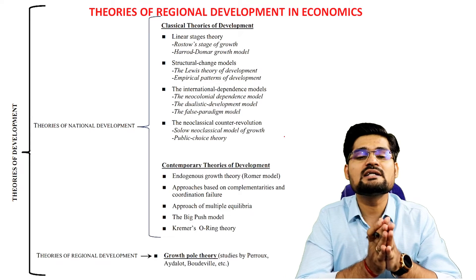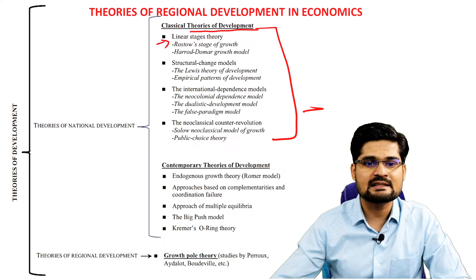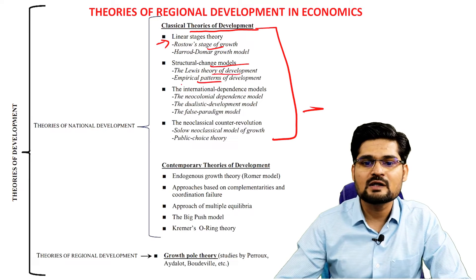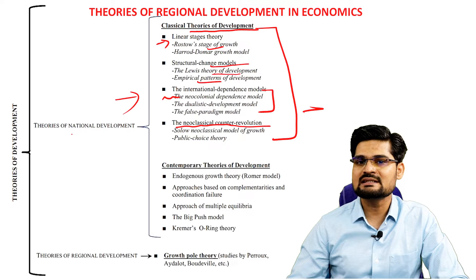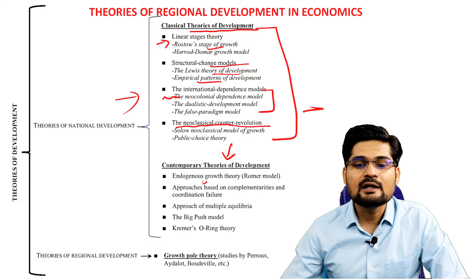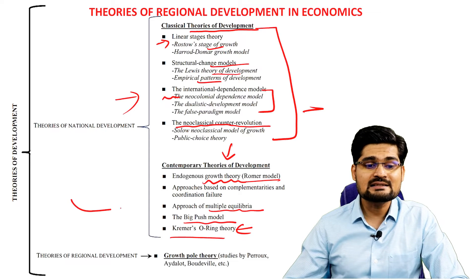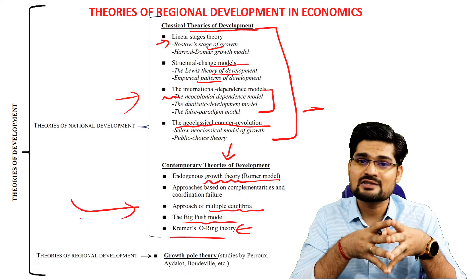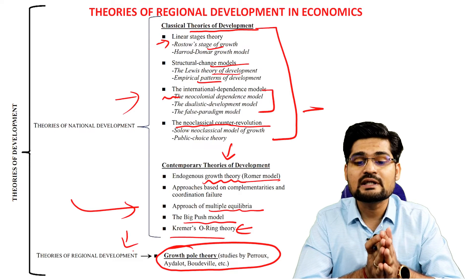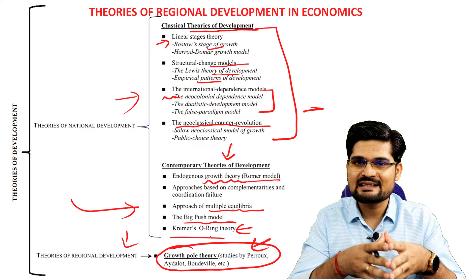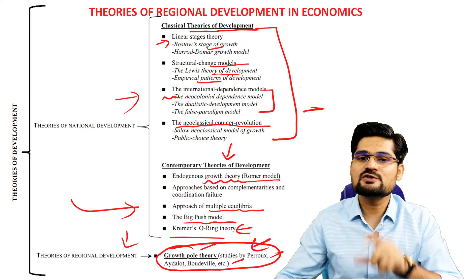There are several regional development theories in economics. Classical theories of development include Rostow's linear stages theory, the structural changes model, and empirical patterns. Then there is the international dependence model, the new classical counter-revolution model, and several others. Contemporary theories include the endogenous growth theory — the Romer model — approach of multiple equilibria, the big push model, and Kramer's O-ring theory. Then we have theories of regional development specifically related to growth pole theory, Perroux's theory, Boudeville's theory, and several others.